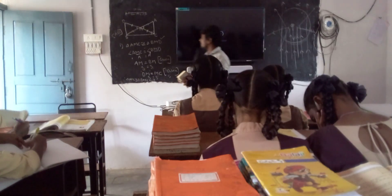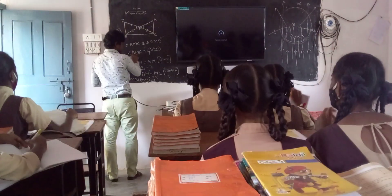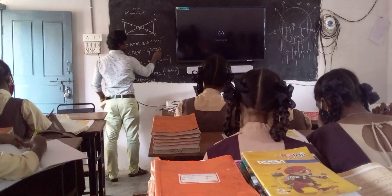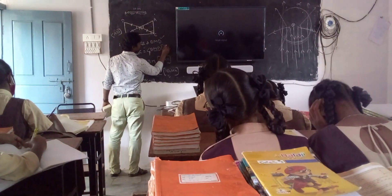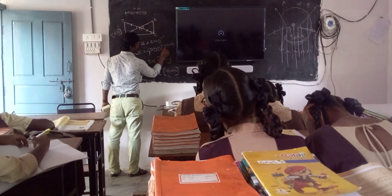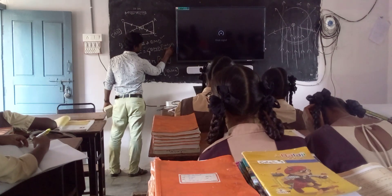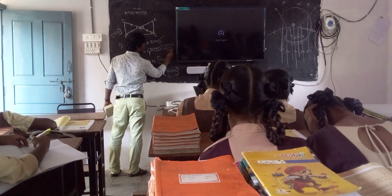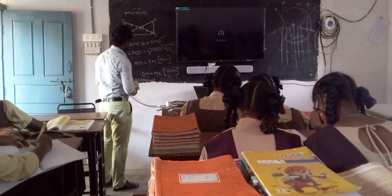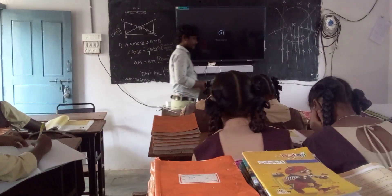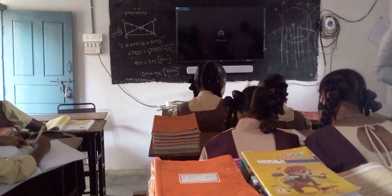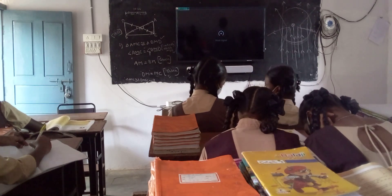Note: in triangle BMD, the angles are the same — vertically opposite angles are equal.